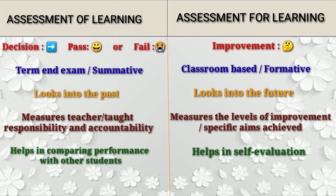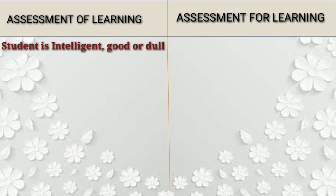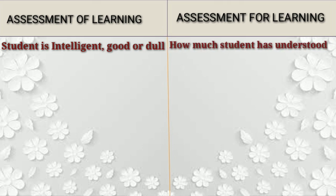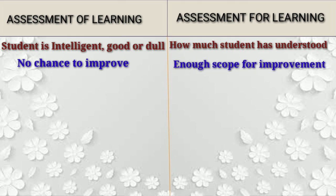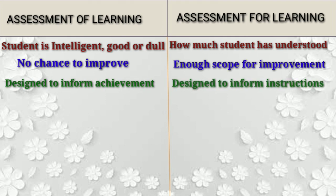In assessment of learning, the role of the teacher is like a facilitator. The teacher evaluates whether the student is intelligent, good or average. While assessment for learning helps the teacher to know how much content is known or understood by the student. Assessment of learning does not give any chance of improvement, while in assessment for learning there is enough scope for improvement. Assessment of learning is designed to inform achievement of students, while assessment for learning is designed to inform instruction.